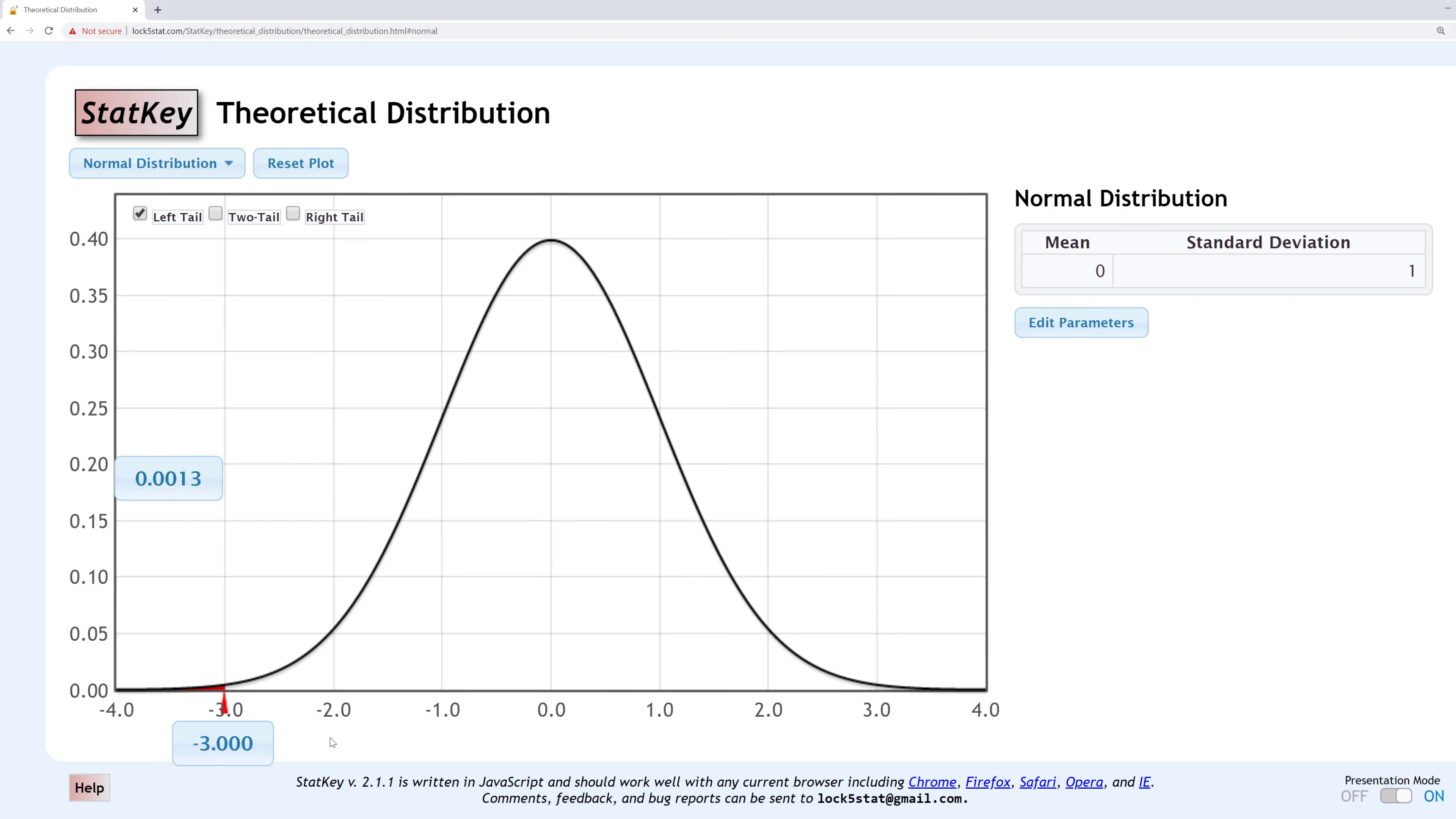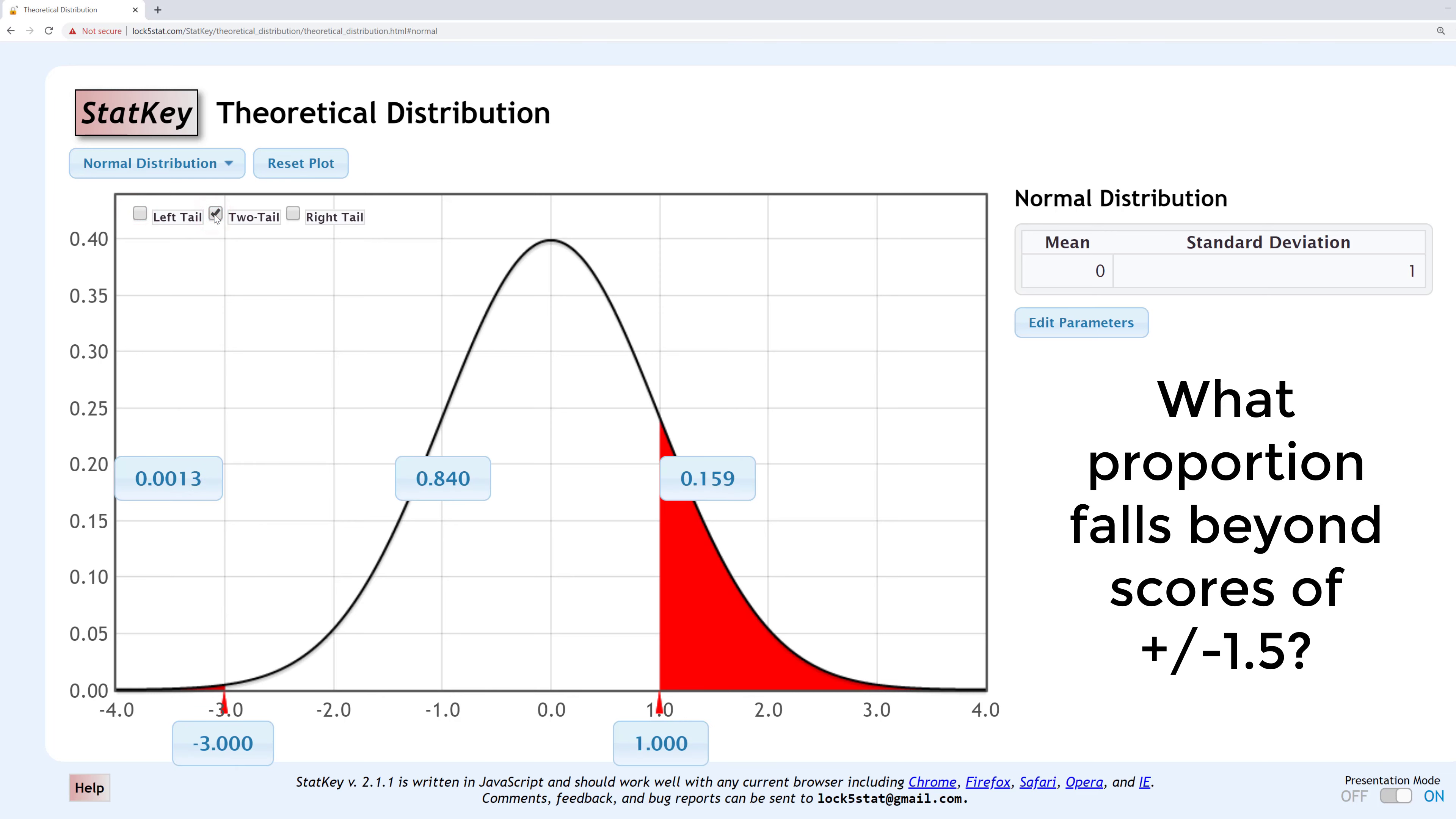Next I'll do a two-tailed example. What proportion falls beyond Z scores of plus and minus 1.5? For this example, I'll uncheck left tail and check two tail. You can use the two tail option in StatKey when you're working with proportions that are symmetrical, which is what you're working with most of the time in statistics.